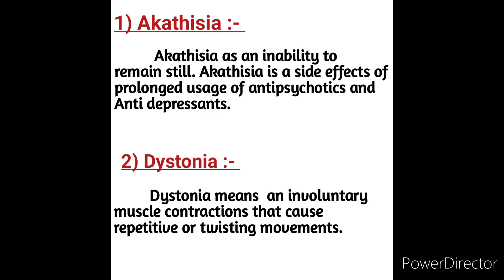The second term is dystonia. Dystonia means involuntary muscle contractions that cause repetitive or twisting movements. Dystonia may affect one or more parts of the body, and sometimes the entire body. The condition can be mild or severe. Examples of dystonia include cervical dystonia, limb dystonia, and laryngeal dystonia.